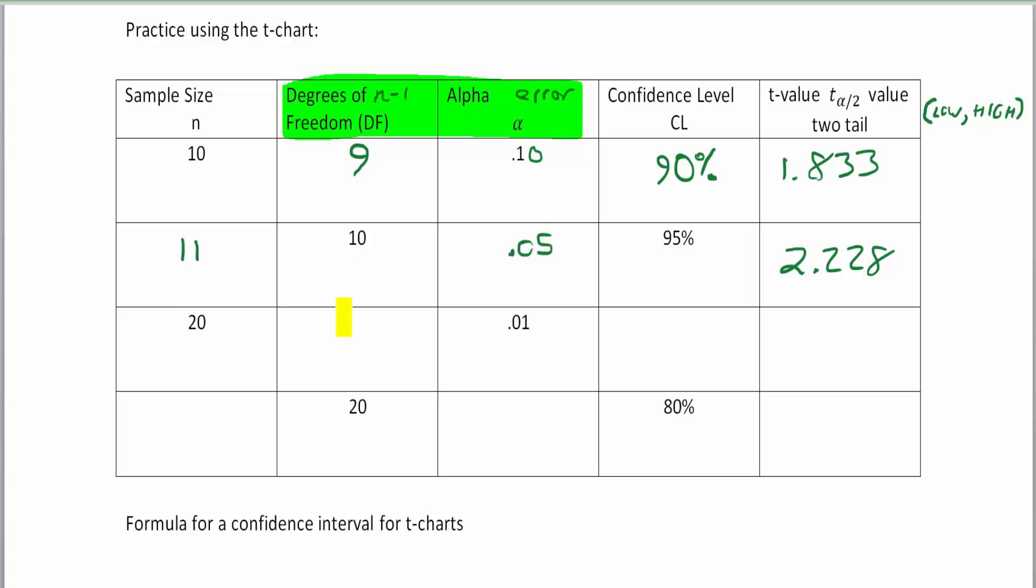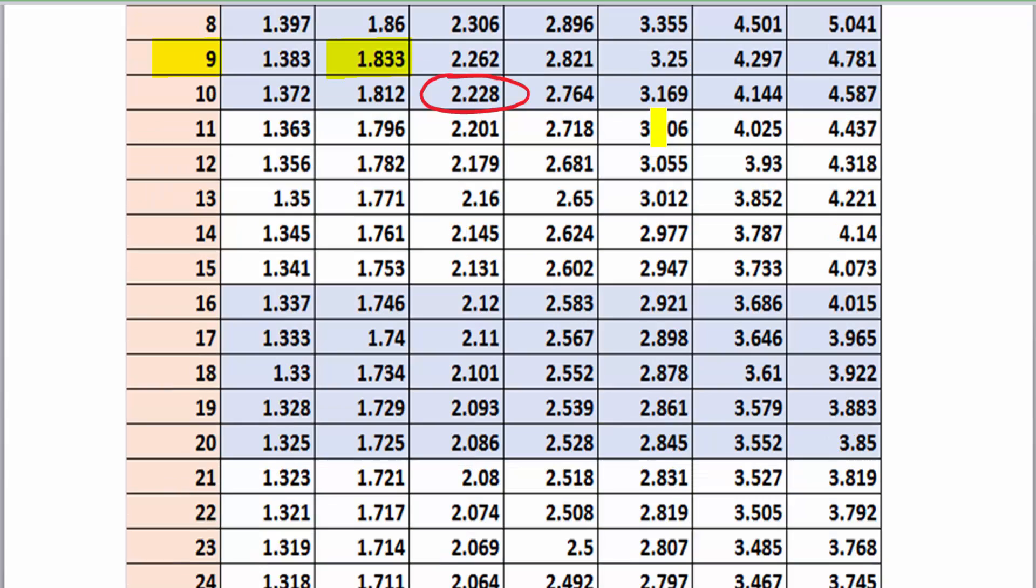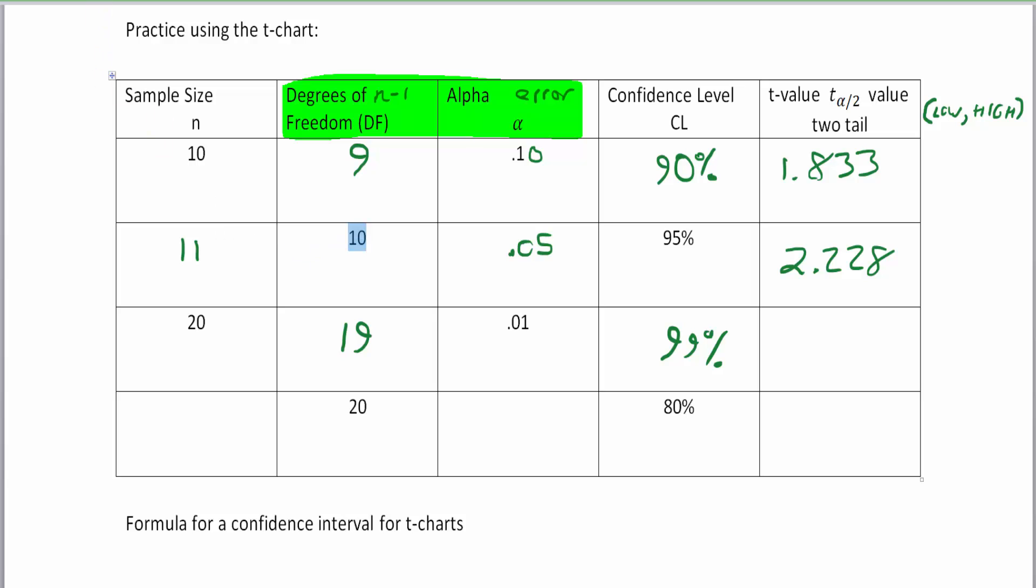Okay, so for this problem here, if you have 20 as your sample size, you have 19 degrees of freedom. If your error is 1%, then your confidence level is 99%. So at 19 degrees of freedom and 0.01 alpha error or 1% alpha error, I'm going to be in this row here. So 1, 2, 3, 4, 5 rows over and down to 19 puts me at 2.861. That's 2.861, or right here, 19 degrees of freedom in this column.